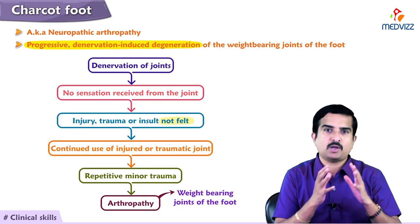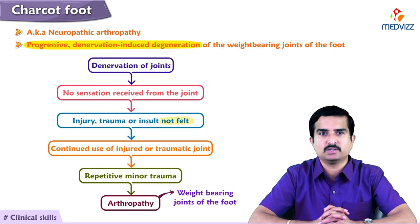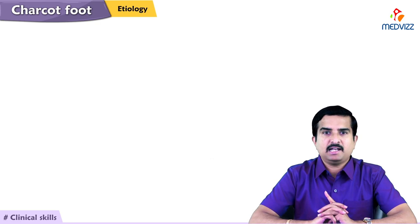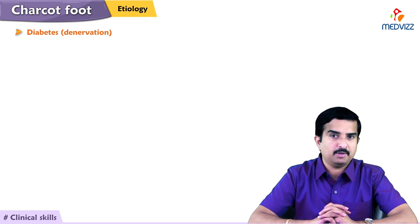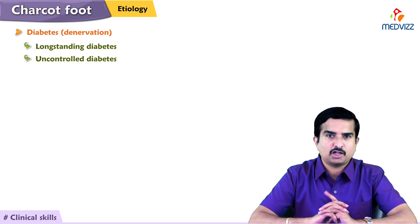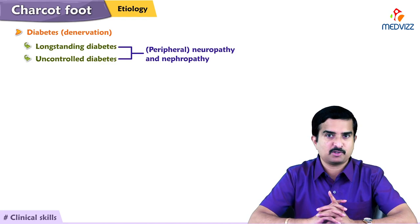Now, why is there denervation? Denervation mainly occurs because of diabetes. Long-standing, uncontrolled diabetes is responsible for the development of neuropathy and nephropathy, especially peripheral neuropathy.